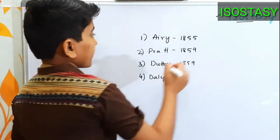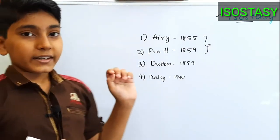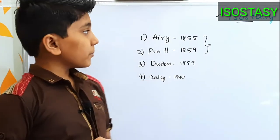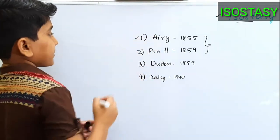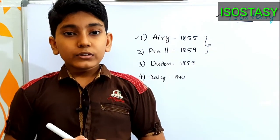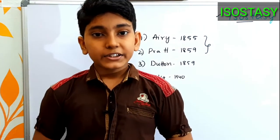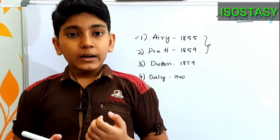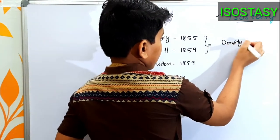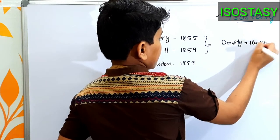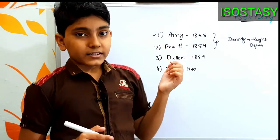The theories given by Airy and Pratt are more scientific when compared with Dutton and Daly's theories, so we will be looking at Airy's and Pratt's theories in detail in this class. As per Airy's concept, we have the continents with many landforms such as mountains, plateaus, and plains, and depending upon the density, the height and depth of a landform can be determined.